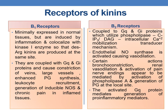B1 receptors are minimally expressed in normal tissue but are induced by inflammation, and they co-localize with kininase 1 enzyme so that desarginine kinins are produced at the same site. They are coupled with GQ or GI proteins and they cause constriction of veins and large vessels, enhanced prostaglandin synthesis, leukocyte recruitment, generation of inducible nitric oxide synthase, and also chronic pain in inflamed tissues.